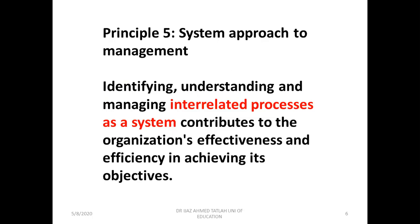Principle five is the system approach to management. Identifying, understanding, and managing interrelated processes as a system contributes to the organization's effectiveness and efficiency in achieving its objectives. The total focus of quality management is towards the achievement of its set goals. They identify different processes, manage and correlate them with prevailing processes through which organizational effectiveness and efficiency is enhanced, and targets are achieved.